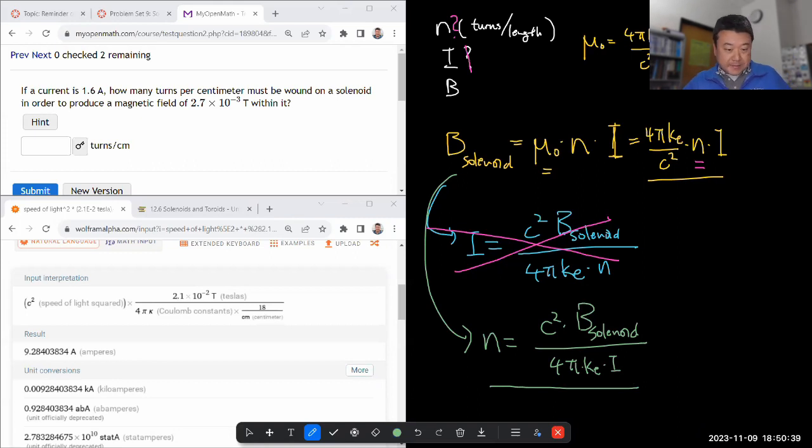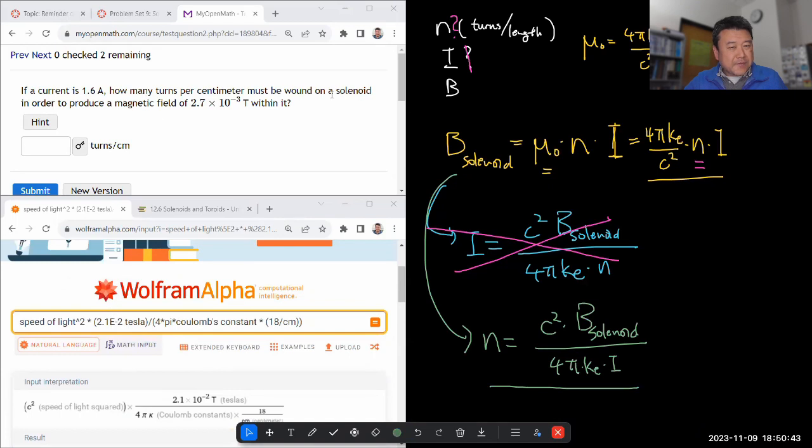So let me plug it in and see. Now this might give you the number of turns similar to the question we just did. Oh let me reuse this. Speed of light squared. Not the same tesla but lower. 2.7 times 10 to the power minus 3 tesla. 4π times coulomb constant. Yeah. And here it's gonna be now current 1.6 ampere.